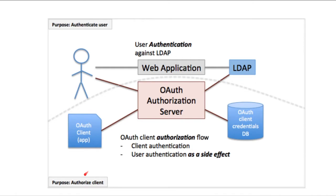OAuth, on the other hand, has authorization of a client as its main purpose. LDAP and OAuth relate to each other in the sense that during an authorization flow, the OAuth client requests authorization to access certain resources. The authorization server needs the user's permission — the user's consent — in order to grant access to these resources. To do that, the authorization server needs to authenticate the user, just like the web application did. The authorization server may ask for a username and password, and will also check against an LDAP server, just as the web application did.